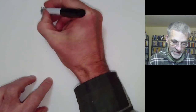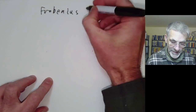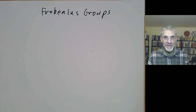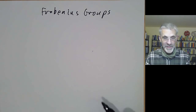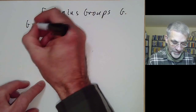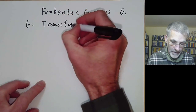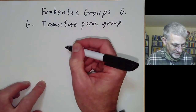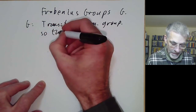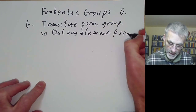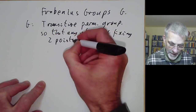This representation theory talk will be about Frobenius groups. I'm going to first recall the definition of a Frobenius group and then prove a basic theorem of Frobenius about these groups, about the existence of the so-called Frobenius kernel. A Frobenius group G is a transitive permutation group on some finite set so that any element fixing two points is the identity.